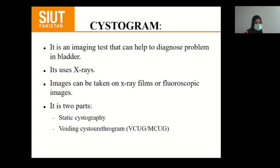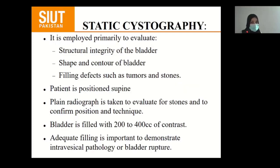Cystogram is an imaging test that helps to diagnose problems in the bladder. It uses X-rays; images can be taken on X-ray films or fluoroscopic images. It has two parts: static cystography and voiding cystourethrogram (VCUG) or micturating cystourethrogram. Static cystography is employed primarily to evaluate the structural integrity of the bladder, shape and contour of the bladder, and filling defects such as tumour and stones.